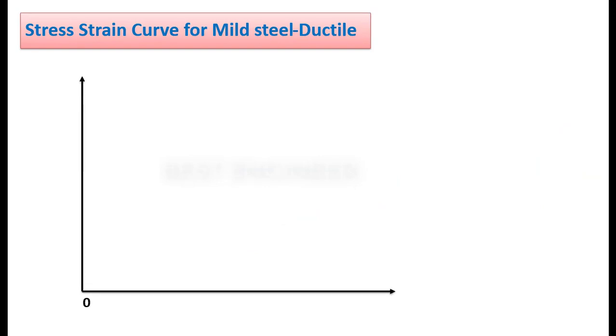Now, let us see the strain curve for mild steel material. In the stress-strain curve, Y-axis represents stress. X-axis represents strain. This is the stress-strain curve for mild steel. It is a ductile material.